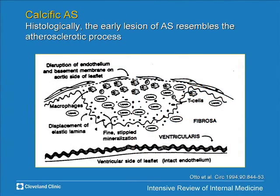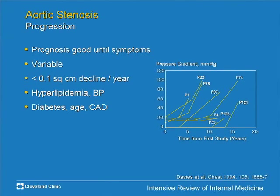Degenerative aortic stenosis has similarities to atherosclerosis — there's lipid infiltration, calcific infiltration, and an inflammatory infiltrate on the valve cusps. Risk factors for progression include hyperlipidemia, hypertension, diabetes, age, and coronary disease. Typically, we see about a 0.1 cm² decline in valve area per year in people with at least moderate AS over age 60, though this can be quite variable.